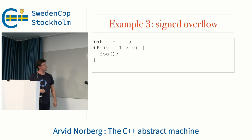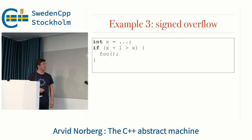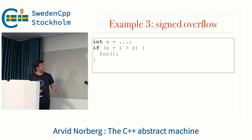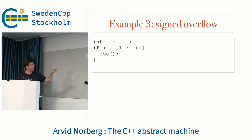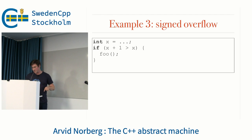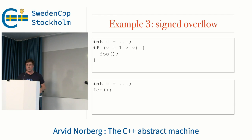For example, you have a function that tests if x plus 1 is greater than x. The only two options in this scenario are that either x plus 1 is greater than x, or you invoke undefined behavior. And we know that you're not invoking undefined behavior — so this is just going to turn into a call to foo, because it's always true.